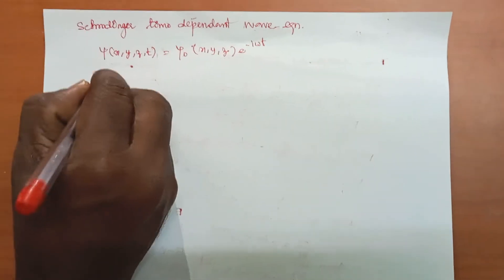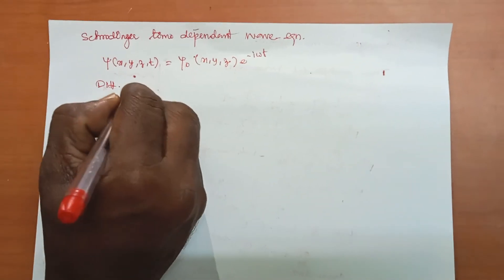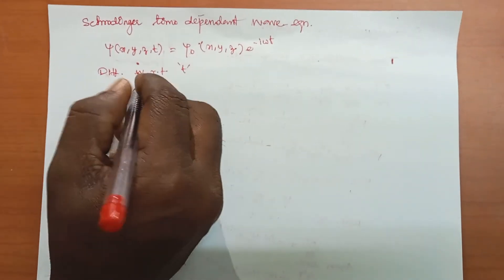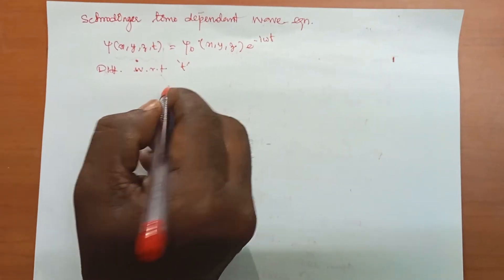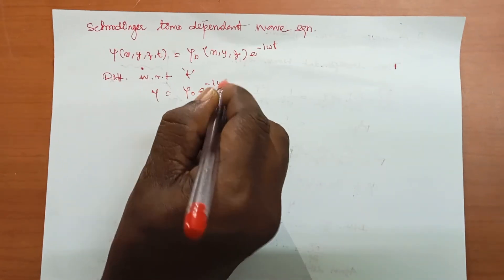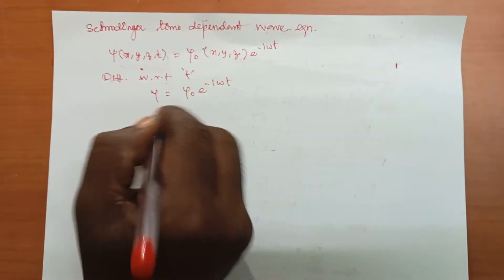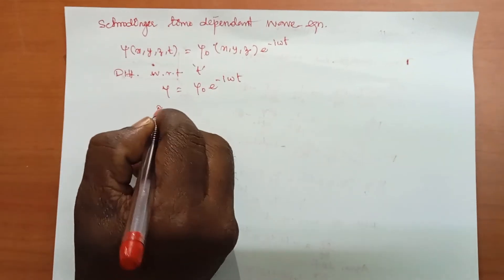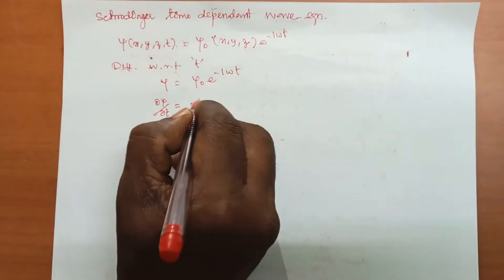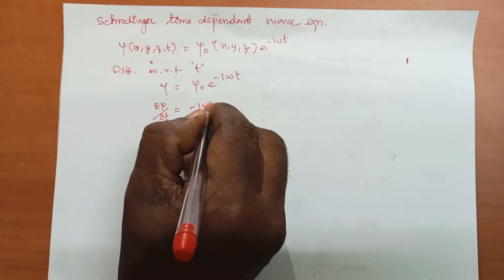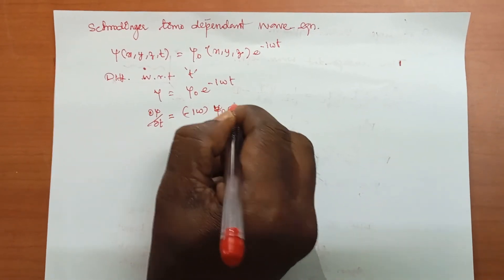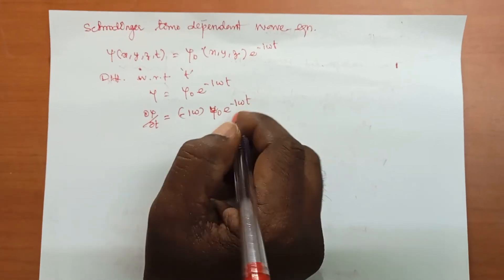Differentiate with respect to t. So, ∂ψ/∂t is equal to minus iω into ψ₀ e to the power minus iωt.